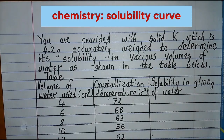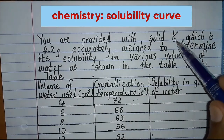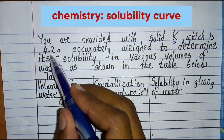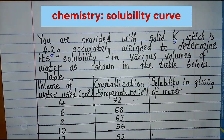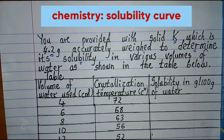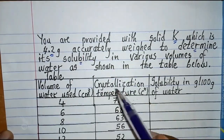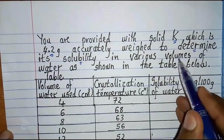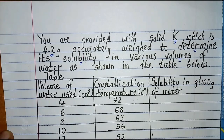Assalamu alaikum warahmatullahi wabarakatuh. This is Mualim of the Nasir. Today we are going to discuss a question on solubility curve. You are provided with solid K, which is 4.2 grams accurately weighed, and this is to determine or calculate its solubility. Solubility is the maximum mass that can saturate in 100 grams of solvent at a given temperature. You need to determine the solubility of solid K in various volumes of water as shown in the table below.